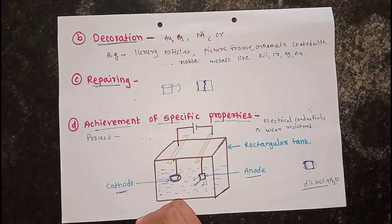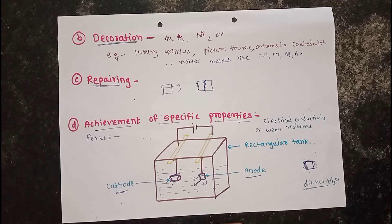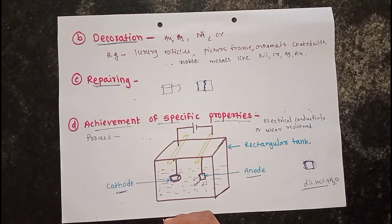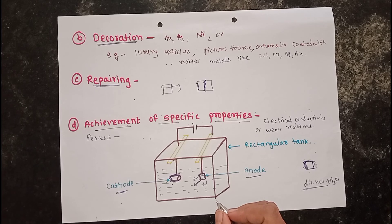Examples of electroplating include the electroplating of silver on an iron spoon and the electroplating of copper on an iron spoon. These examples will be discussed in the next video. Today we stop here — thank you.